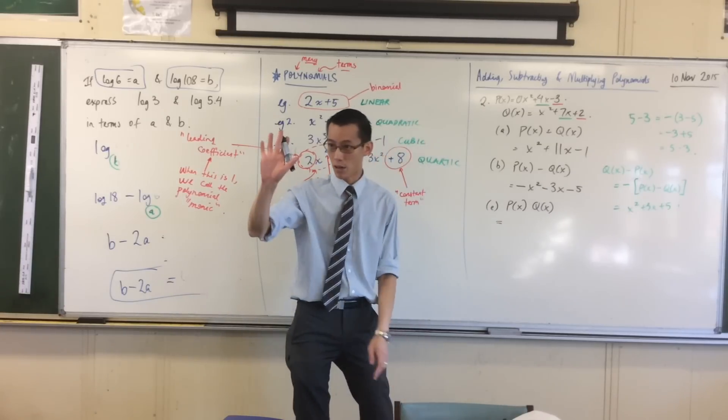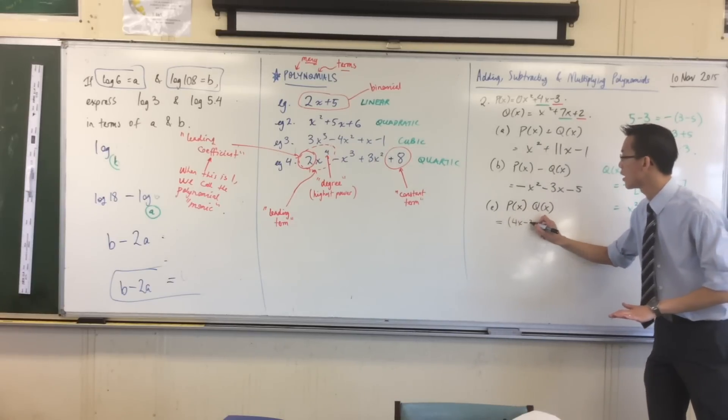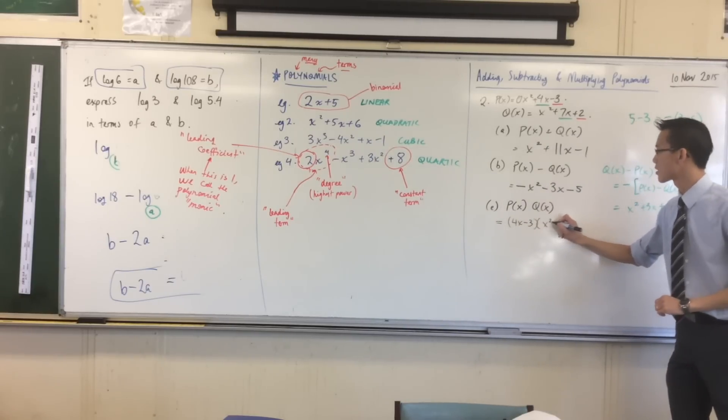So I say equals line 1 multiplied by line 2. So that's 4x take away 3, times x squared plus 7x plus 2.